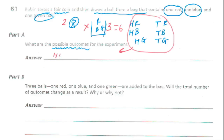So writing neatly: heads and red, heads and blue, heads and green, tails and red, tails and blue, tails and green — six things.